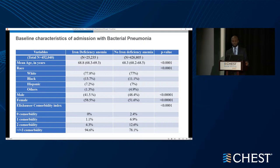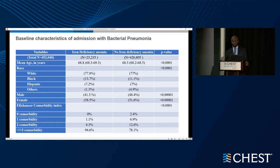These are the baseline characteristics of our patients. The age was evenly distributed — almost the same average age. We also noticed that the ratio of distribution was also evenly distributed. Importantly, patients with iron deficiency anemia actually had higher comorbidity using the Elixhauser comorbidity index.